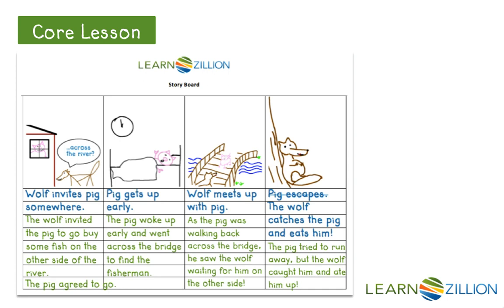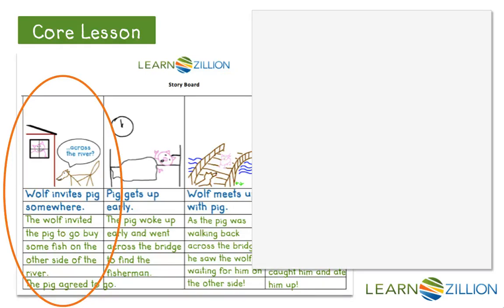I need to start by writing about the events on my storyboard in order. The first event on my storyboard is the wolf invited the pig to go buy some fish on the other side of the river, and the pig agreed to go. So I'm going to start by writing that event. I don't have to copy the exact words from my storyboard onto my paper, but I do want to make sure I include all the details from my storyboard in my first draft. As I'm writing, I can always look back at the original text for ideas about what words to use.